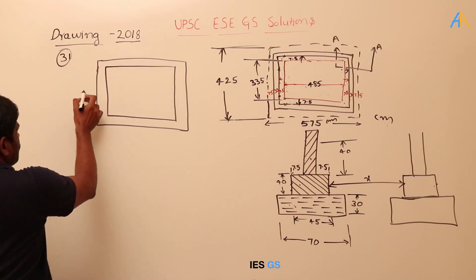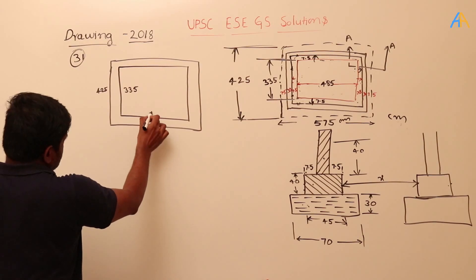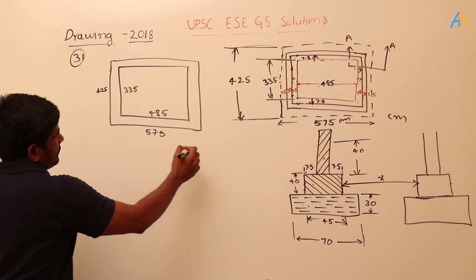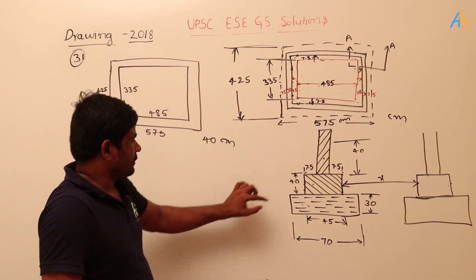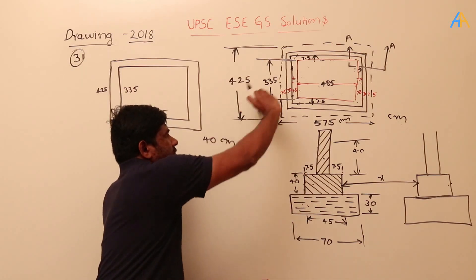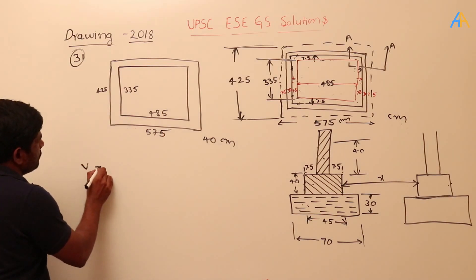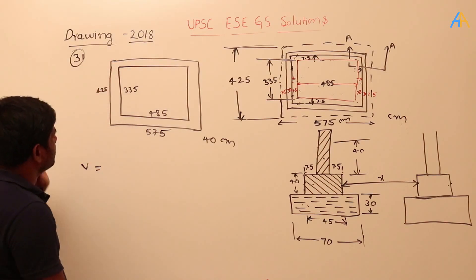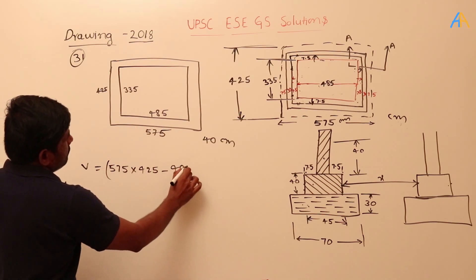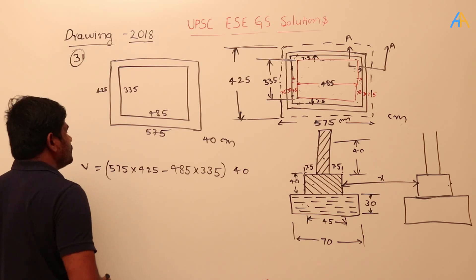The dimensions are: outer 425cm × 575cm, inner 335cm × 485cm, and depth is 40 centimeters. In the top view we calculate the area, and cutting gives us the 40cm depth. The volume formula is: (outer area minus inner area) multiplied by depth — that is (575×425 minus 485×335) multiplied by 40.